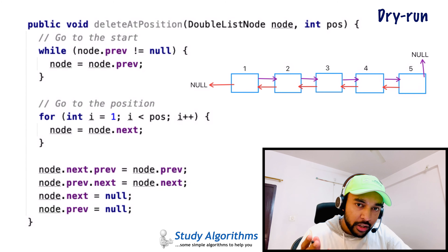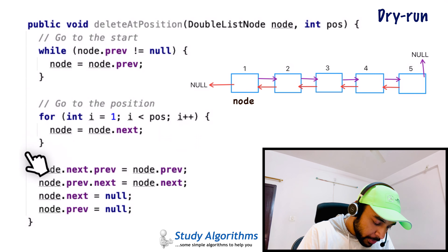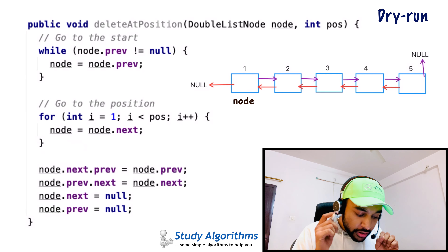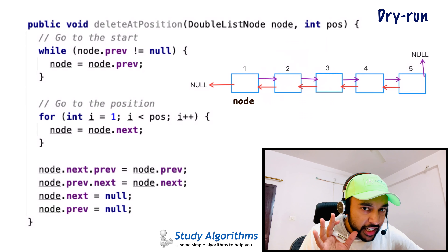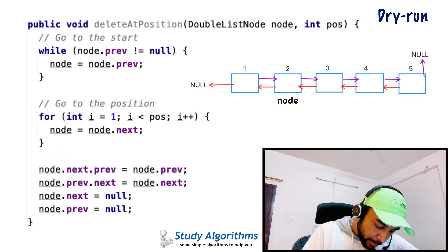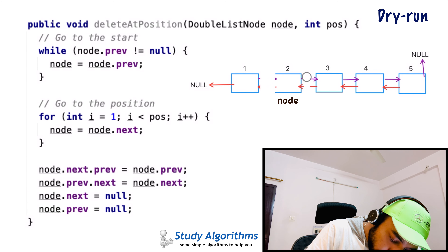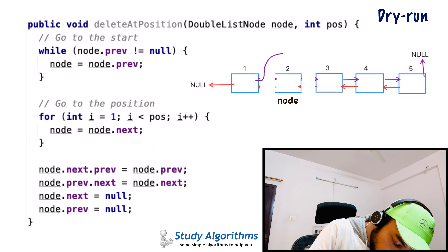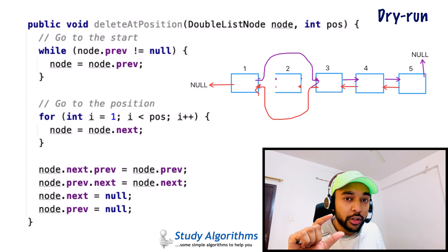Similarly, the function deleteFromEnd accepts any arbitrary node. We travel to the end by doing node.next until we reach a node whose next is null. We store the previous pointer in a temp variable. Then we do node.previous equals null, removing the previous pointer. Next, temp.next equals null, removing the next pointer of the second-to-last node. The last node has been removed.